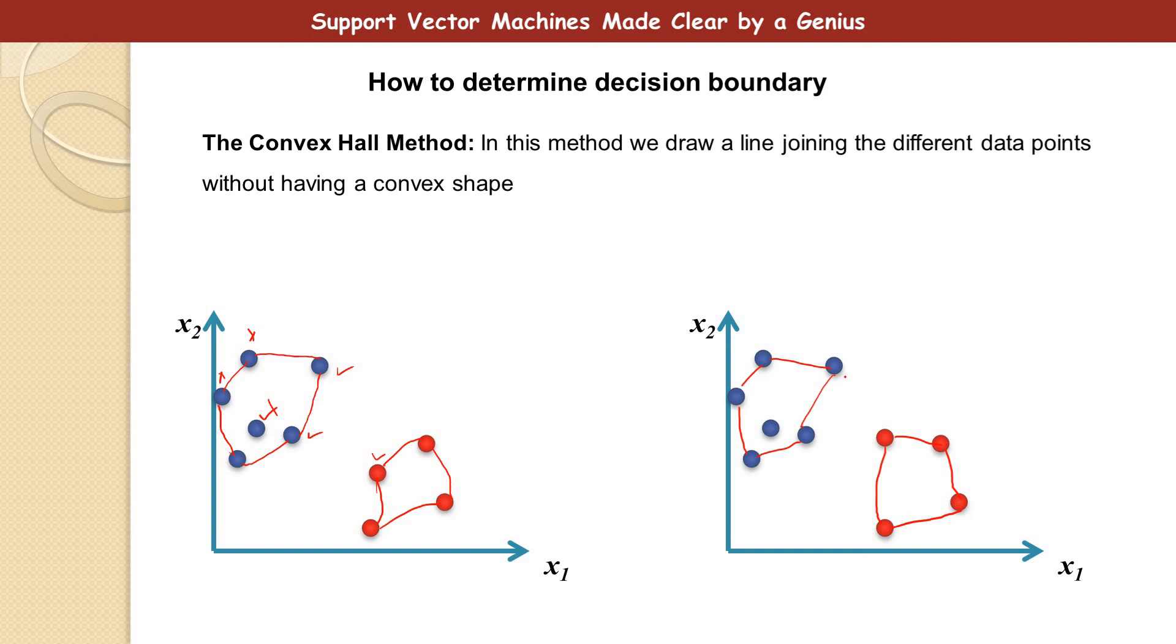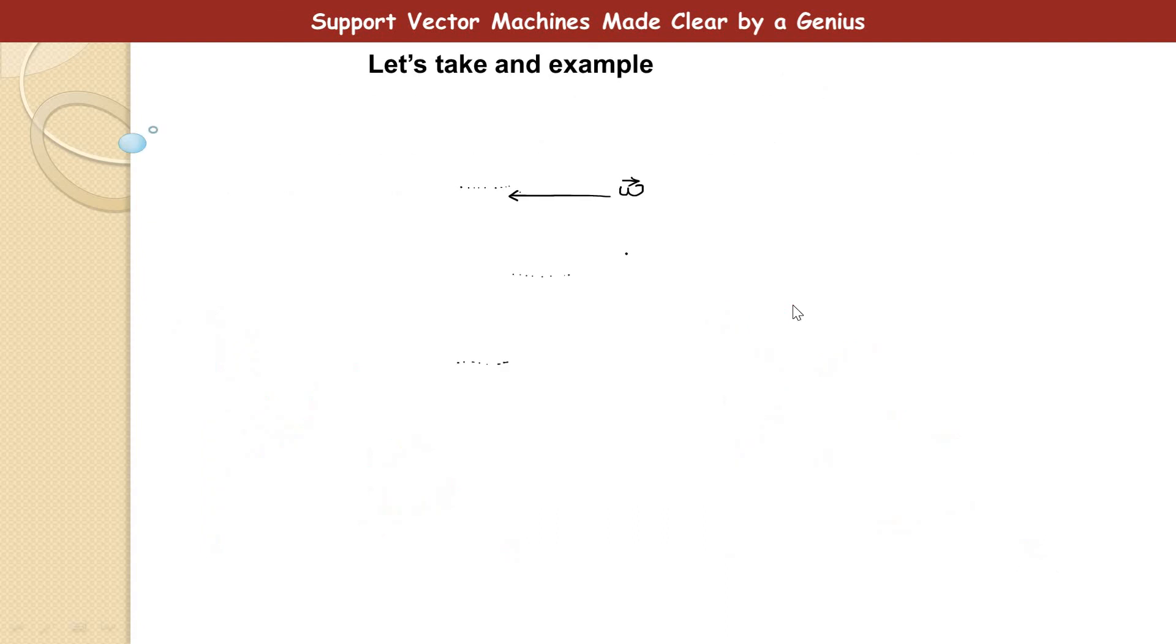So in this case, you can see that this seems to be the support vectors we have. And these are not support vectors. So this is a convex hull method to determine the decision boundary. Because in support vector problems, the challenge is to determine the decision boundary.